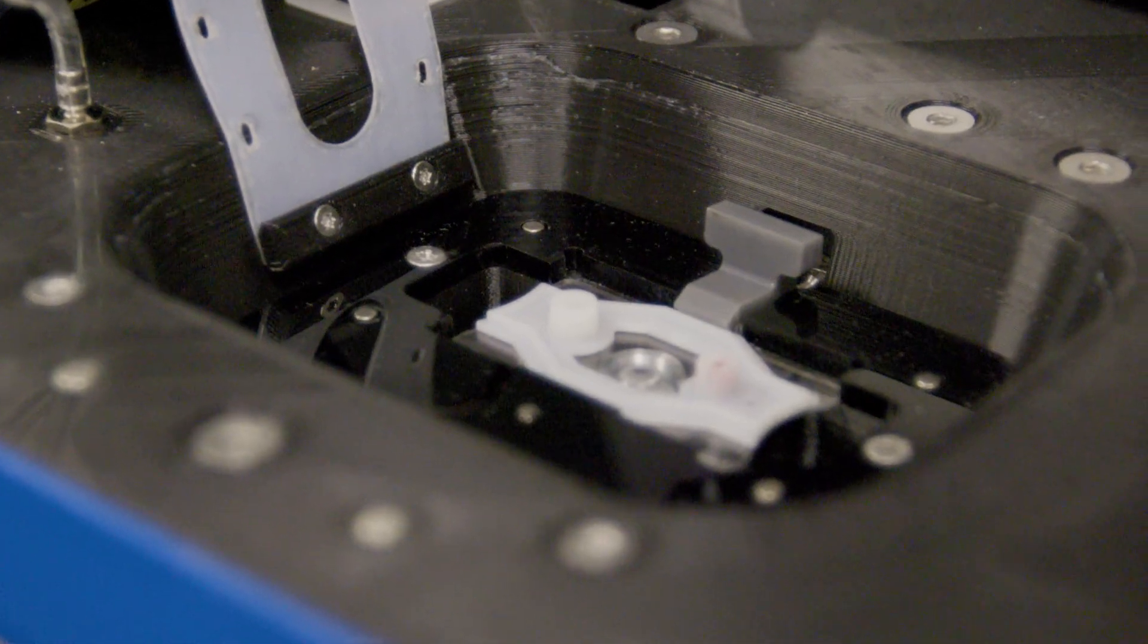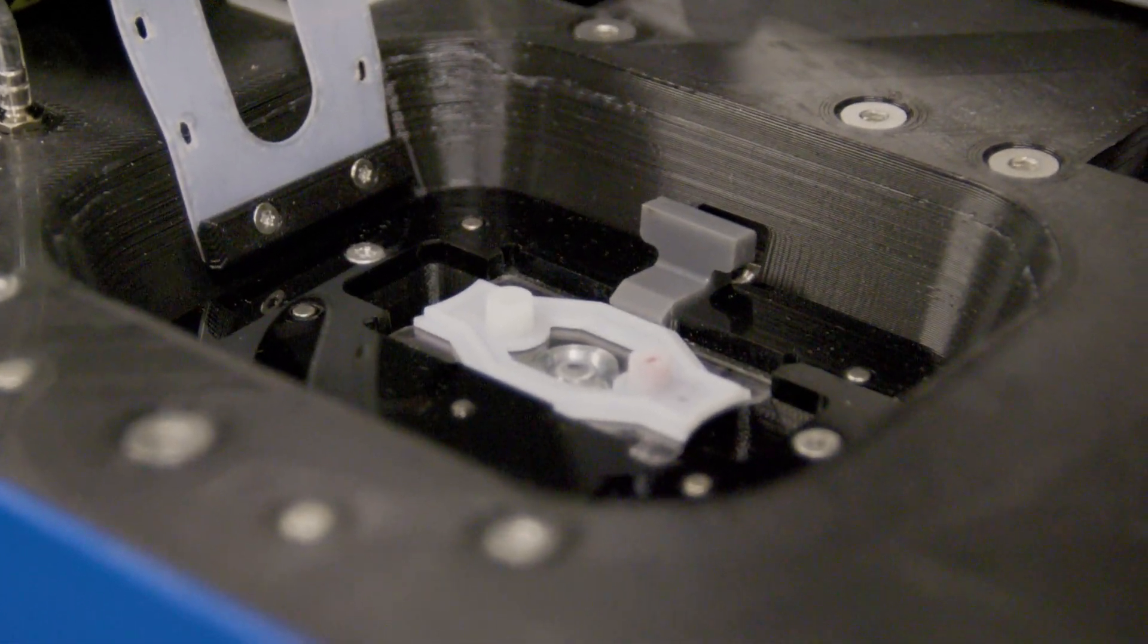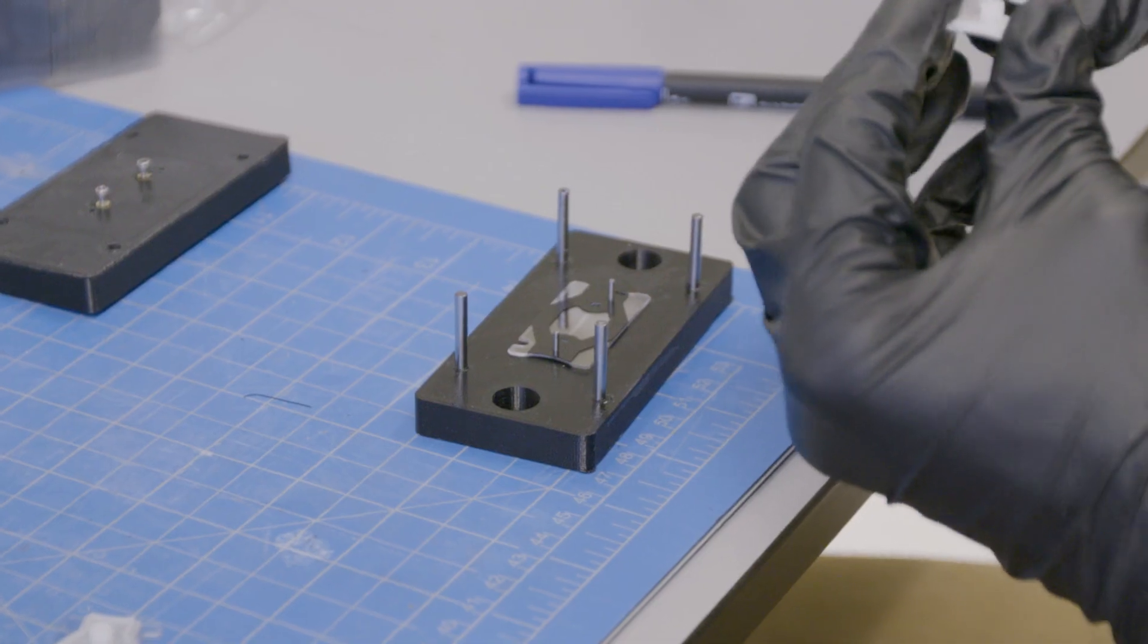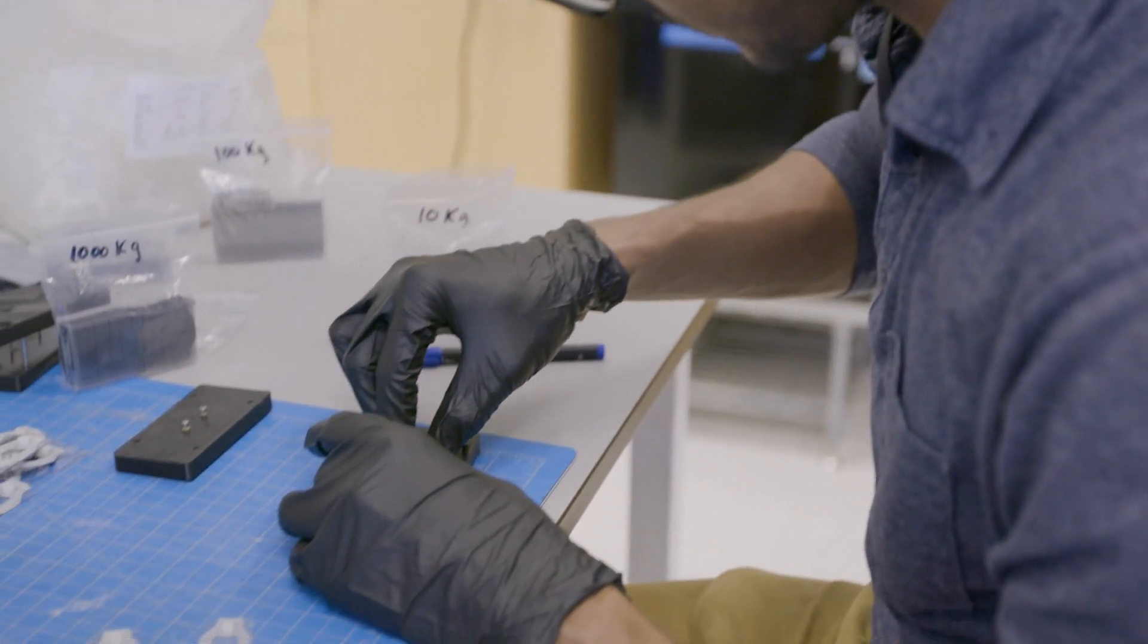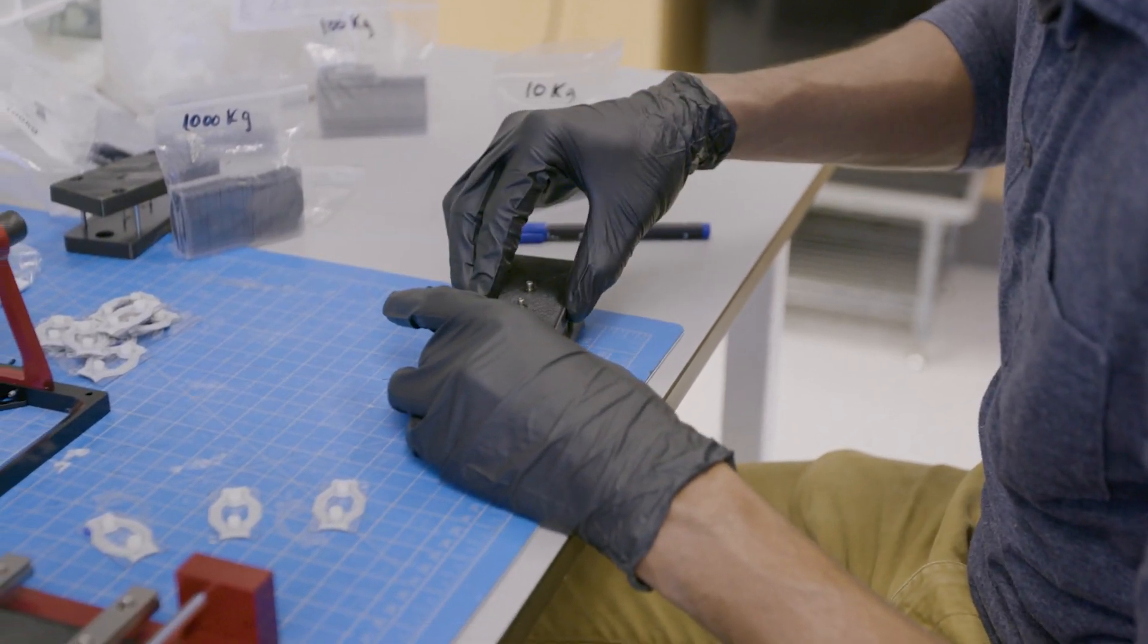Then the challenge becomes how to make the flow cell, which is the disposable cartridge that the machine consumes for every test, as cheap as possible. I pushed the team to figure out a way to do that here in-house. Then we knew we had a path to do something low-cost.